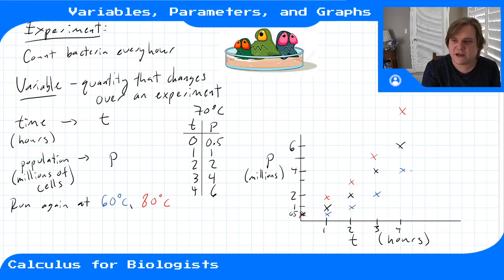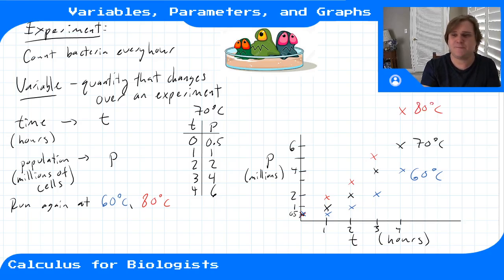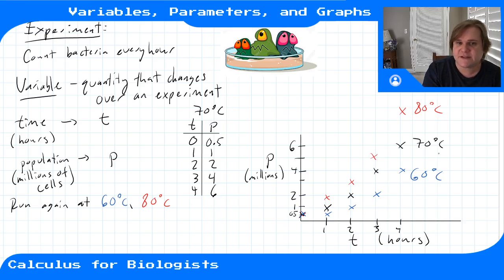So now we have kind of an interesting conclusion. At 60 degrees Celsius we still have exponential growth but it's slower than it was in our original experiment, and at a higher temperature it grows faster. So what we've done is we've repeated the same experiment—we measured the same variables, we measured time, we measured population.